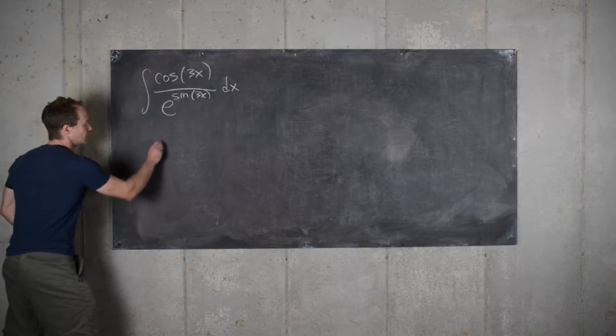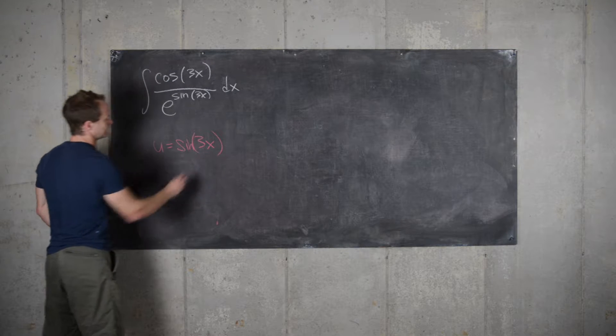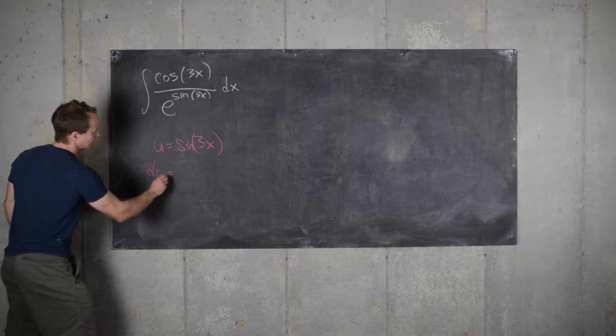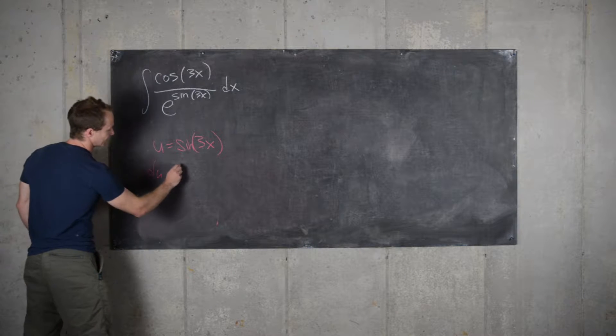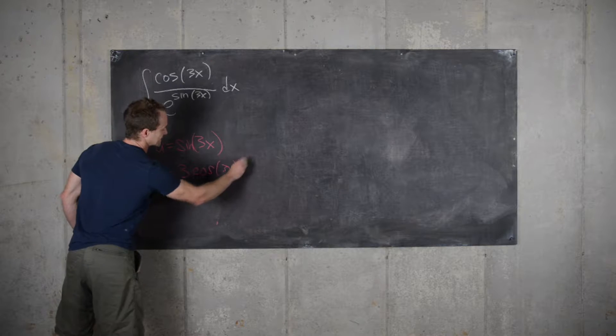So let's see, we get u equals sine of 3x. So that gives us du. We have to use the chain rule here. So that's going to give us 3 times cosine of 3x dx.